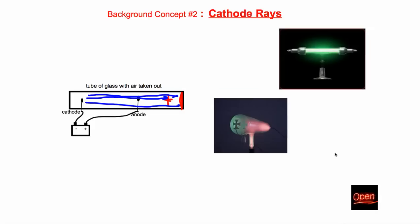What we need to know about cathode rays is that they are formed when you run electricity in a Crookes tube, and that they seem to be something — it isn't just sort of randomly glowing. There definitely seems to be something moving there. Cathode rays come from the cathode and are definitely something moving toward and past the anode.